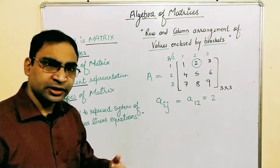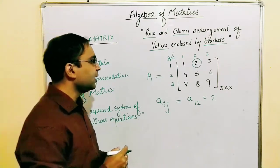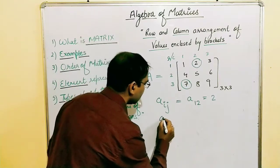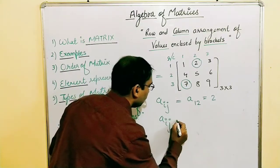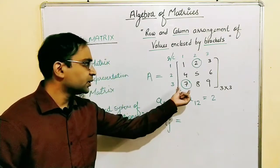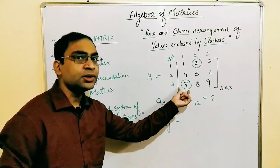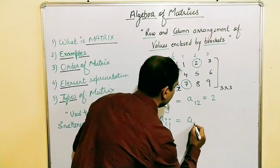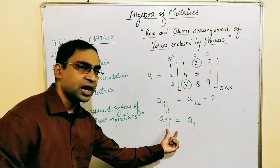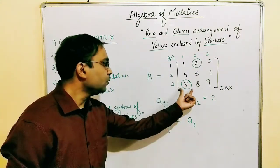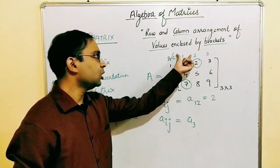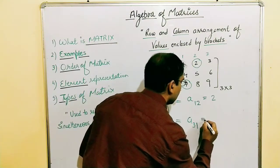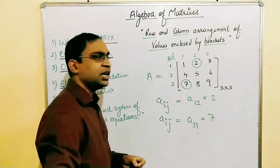Let me do it once again with another element. If I want to represent element 7 — this is aᵢⱼ — what is i for this 7? The row number is three. And what is j? The column number for 7 is the first column, so j = 1. Therefore this is a₃₁ = 7.